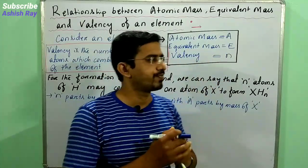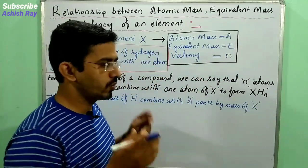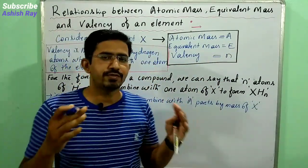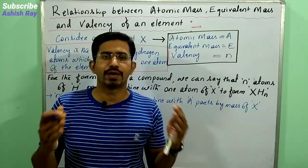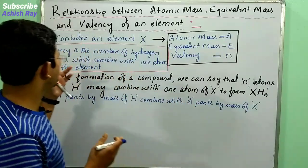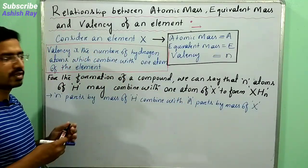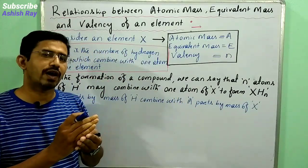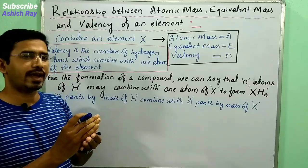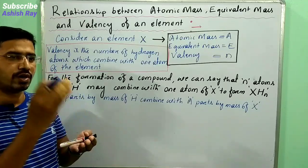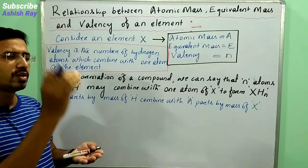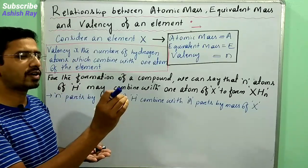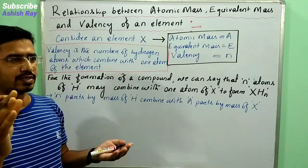We know the different forms of valency, and here is one definition: valency is the number of hydrogen atoms combined with one atom of an element.